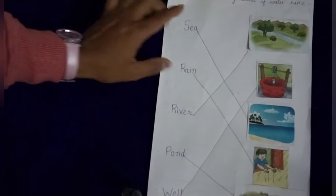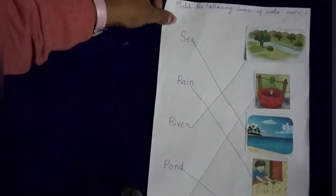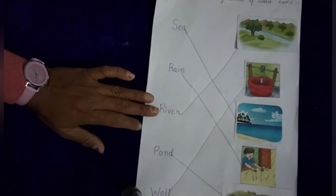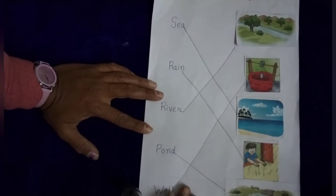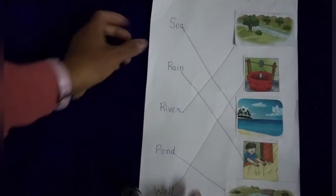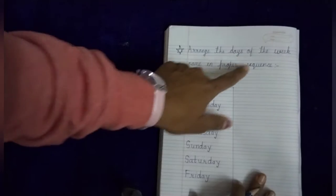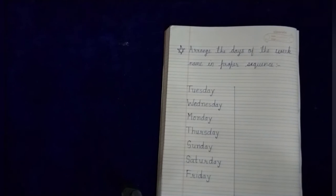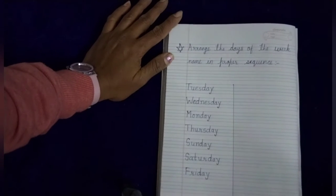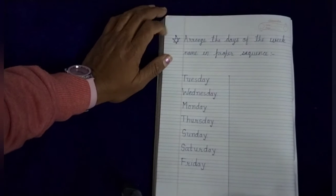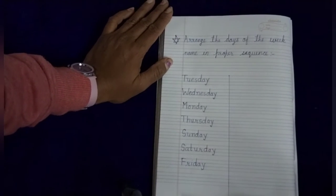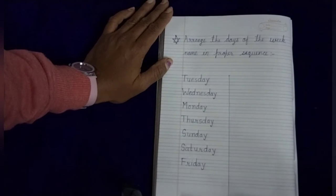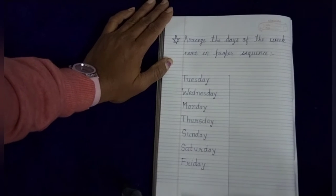Okay students, you saw the question: match the following sources of water names with their pictures. We matched the sources of water names with their pictures. I hope you understood this question. Our next question is: arrange the days of the week names in proper sequence. You all know we have seven days in a week: Sunday, Monday, Tuesday, Wednesday, Thursday, Friday, Saturday.